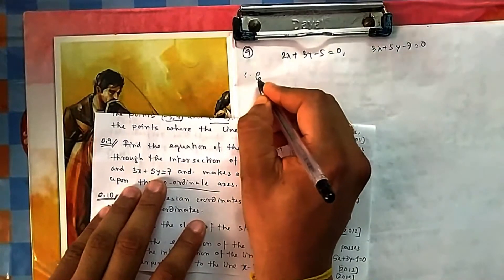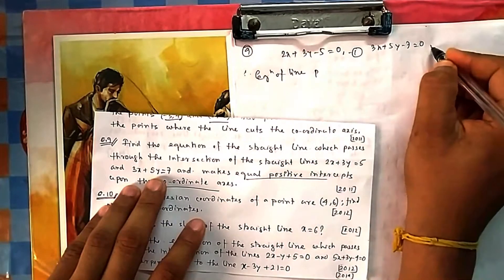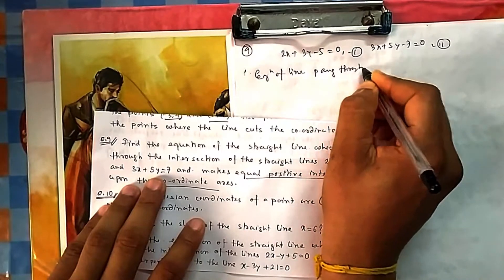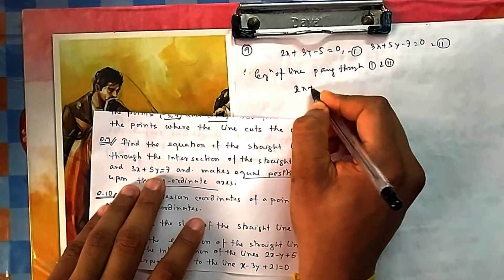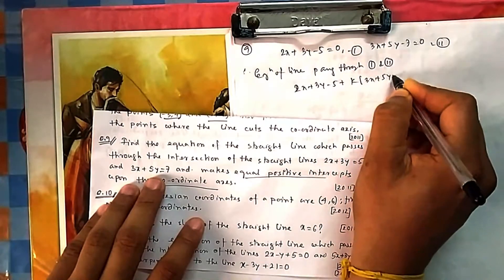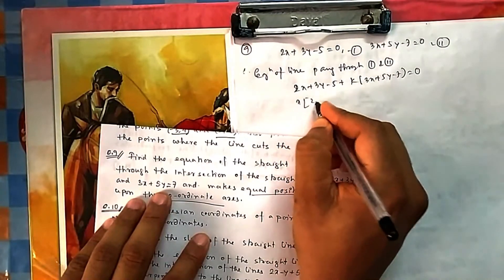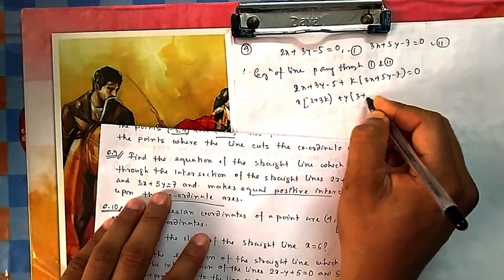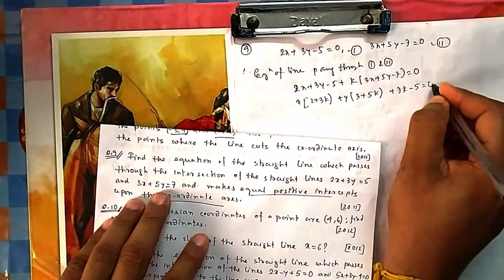The equation of the line passing through the intersection of line 1 and line 2 will be: 2x plus 3y minus 5 plus k times (3x plus 5y minus 7) equals 0. Taking x common gives (2 plus 3k), taking y common gives (3 plus 5k), and the constant becomes (7k minus 5) equals 0.